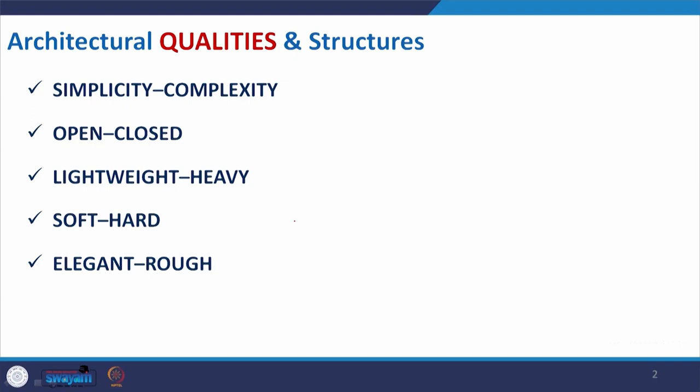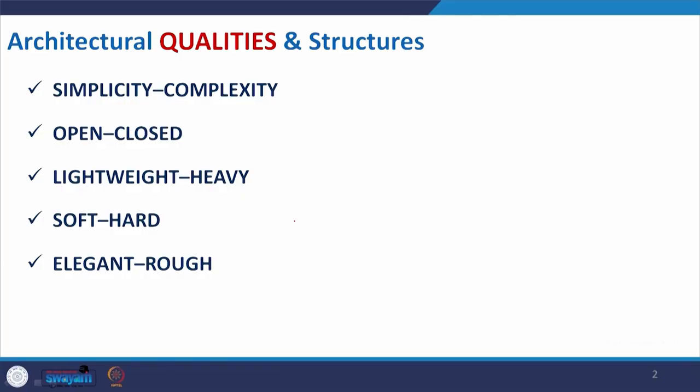In lecture number 2 we discussed different structural examples that fulfilled the concept of different architectural form — concepts such as dynamic, static, chaos, or ordered form, and how structure helps bring those concepts into reality. In this lecture, we will learn about architectural qualities — not the qualities of materials, but the overall experience. We will also see how different structures help maintain and achieve that quality.